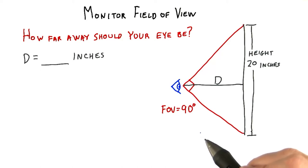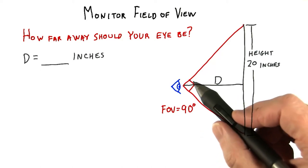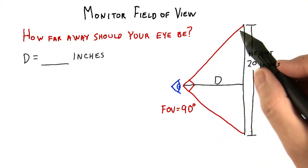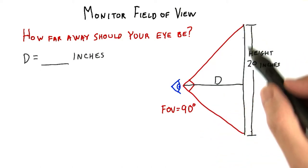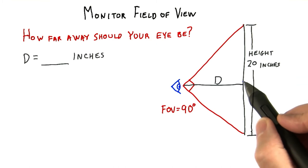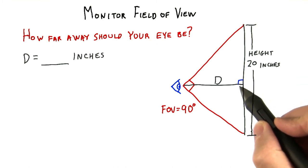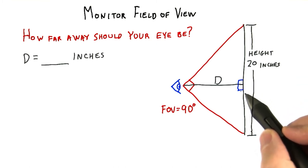We don't really need any formula for this one. This is 45 degrees, and this is 45 degrees, so these angles must be 90 degrees.